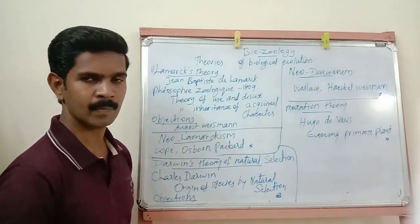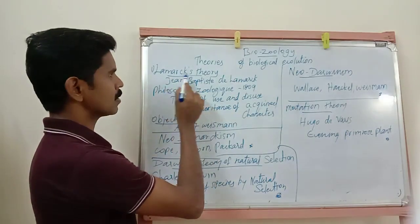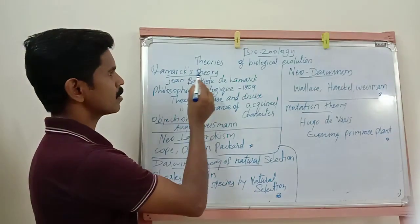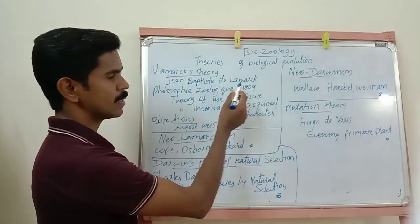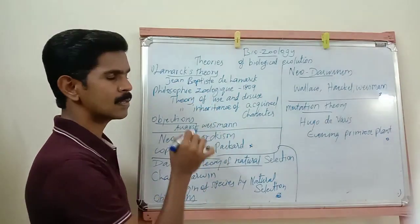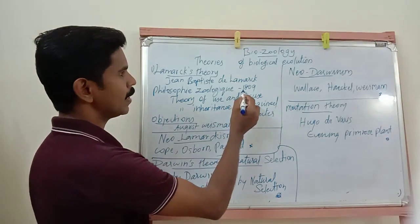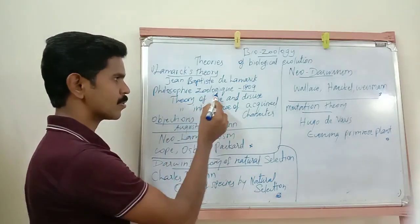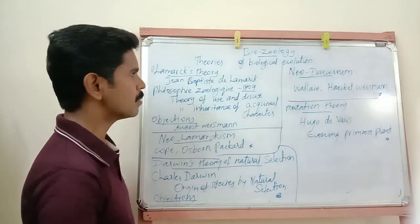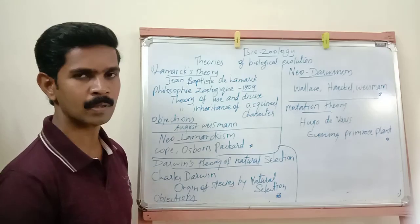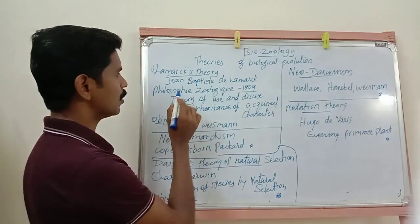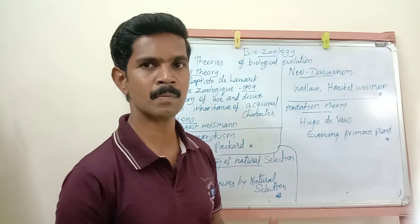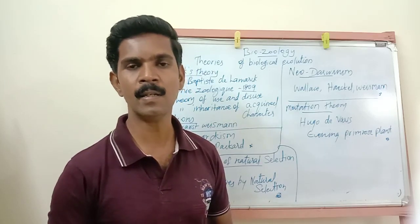Our first theory is called Lamarck's theory, otherwise called Lamarckism. This theory was introduced by the naturalist Jean Baptiste de Lamarck. He published one book called 'Philosophie Zoologique,' and in this book he explained about biological evolution — how living organisms originated — giving detailed evidence.